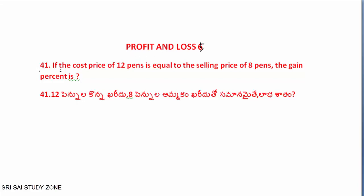So, the 41st question: If the cost price of 12 pence is equal to the selling price of 8 pence, find the profit percentage. We have to calculate the gain profit.